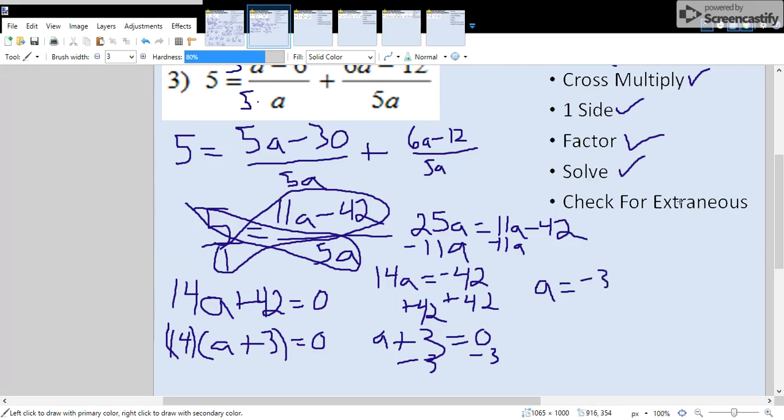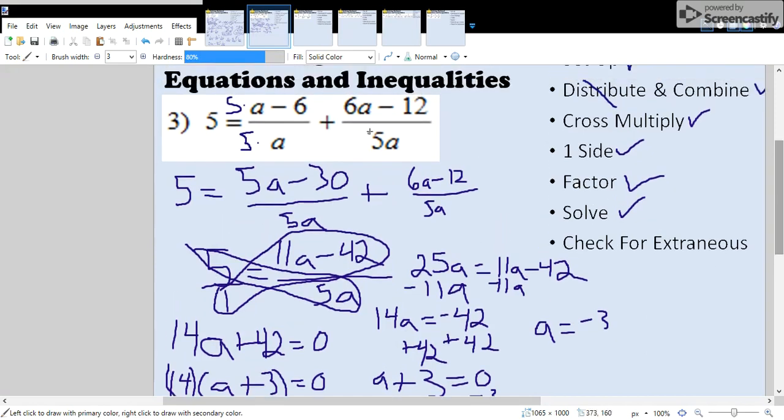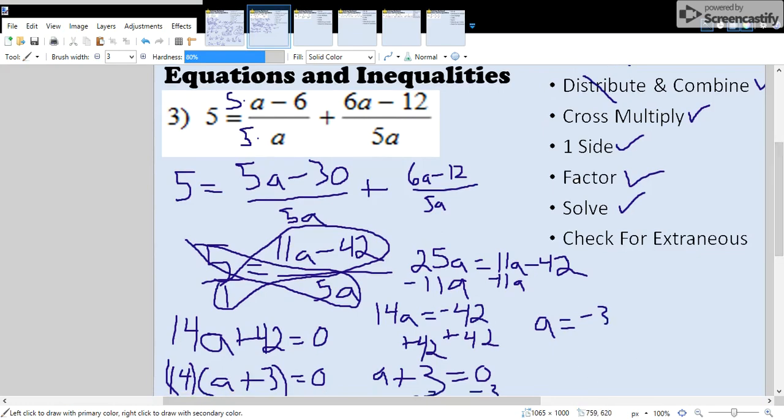Our last step, step seven, we're going to check for extraneous solutions. So we're going to substitute wherever we see an a in the original. We're going to plug in negative 3 instead to get something that will look like this.